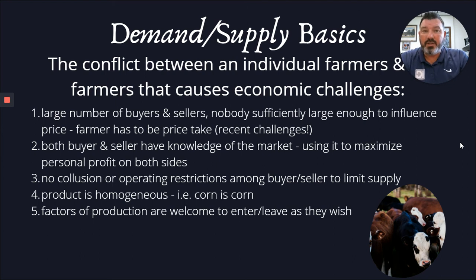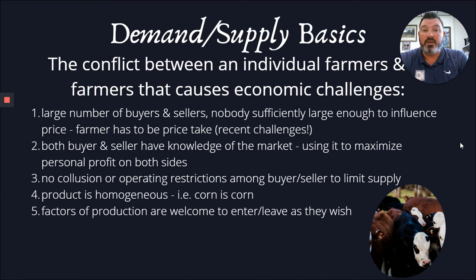There's always a conflict between individual farmers that causes economic challenges. With a large number of buyers and sellers, nobody is sufficiently large enough to influence the price — the farmer has to be a price taker. Both buyers and sellers have knowledge in the marketplace and will utilize that to maximize profit. There's no collusion or operating restrictions amongst buyers or sellers to limit supply. The product is pretty homogeneous — corn is basically corn, soybeans are basically soybeans, milk is for the most part milk — and that creates a lot of competition, with factors of production welcome to enter and leave as they wish.